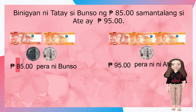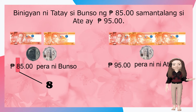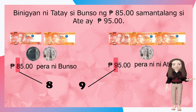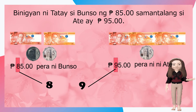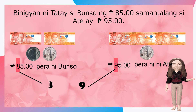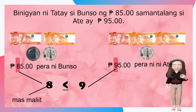Ngayon, napansin mo ba ang unang digit? Tama, ang unang digit sa walumpot limang piso ay walo. Samantalang sa siyam napot limang piso ay siyam. Ating paghahambingin ang walo at siyam. Ano ang iyong masasabi? Tama, mas maliit ang walo kaysa sa siyam. Kung ganoon, ang simbolong ating ilalagay ay mas maliit, kaya ito ay nakaharap sa siyam.